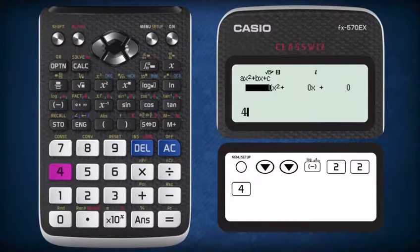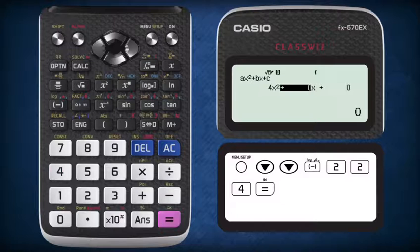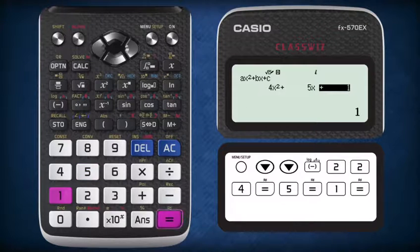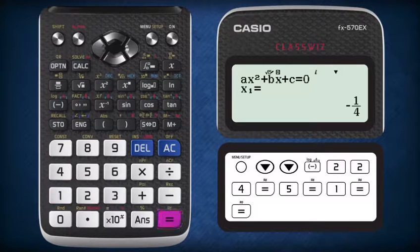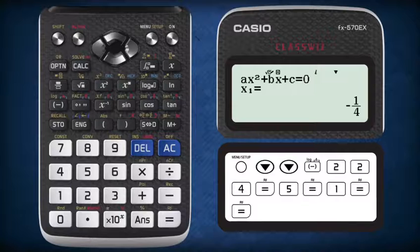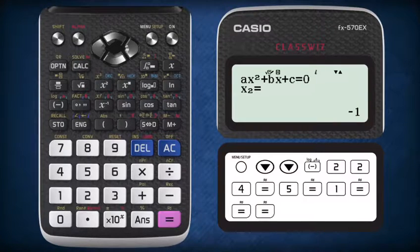Enter the value of 4 as the coefficient of x², 5 as the coefficient of x, and 1 as the constant. After keying in these values, pressing equal once gives you the first solution of x = -1/4. Pressing equal again gives you the second solution of x = -1.